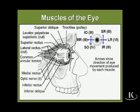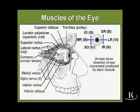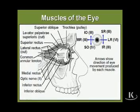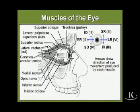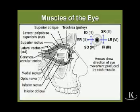The classical way of testing eye movements is by describing the capital letter H with your finger or a pen light and having the patient follow it: lateral, up, down, medial, up, down. You've thereby tested each of the six muscles individually and those three cranial nerves.